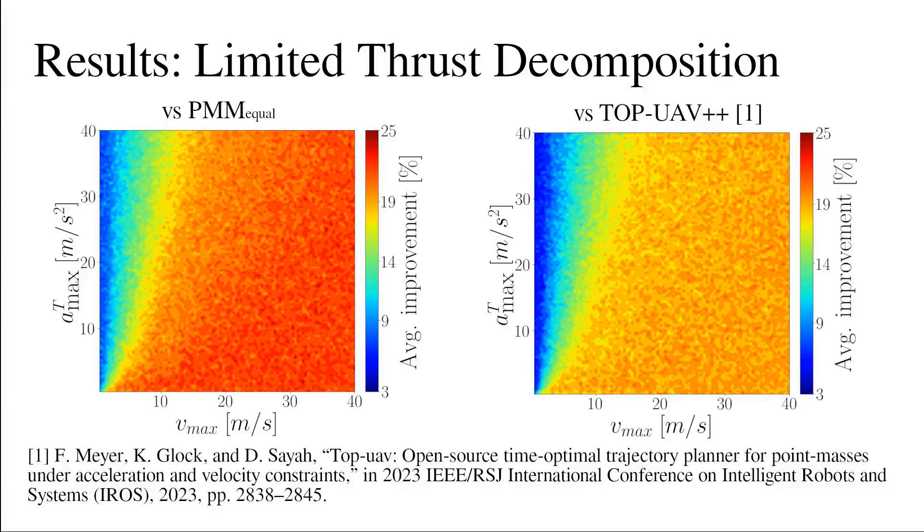To show the extent of the trajectory duration improvement when utilizing our limited thrust decomposition approach, we assess the average reduction in two-waypoint trajectory duration, compared to PMM using equal per-axis acceleration and velocity constraints.